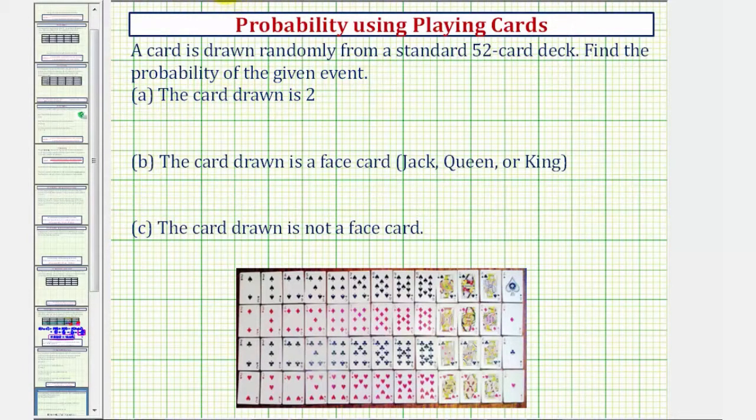Before we begin, let's describe the standard deck of cards given here. We have 52 cards. There are four suits given in the rows: spades, diamonds, clubs, and hearts.